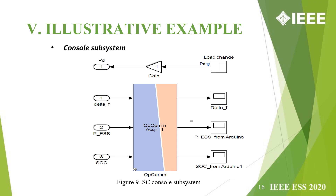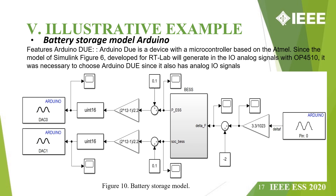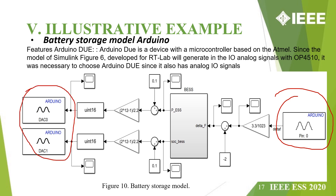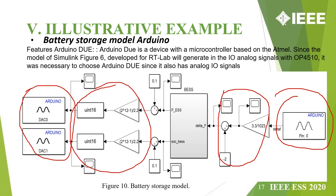Opal-RT's Op-Com block allows communication between command stations. The console subsystem contains user interface blocks — such as scopes, displays, manual switches, and constants — and runs on the host PC asynchronously from the computing subsystem. The battery storage model contains analog inputs and two analog outputs, along with blocks that perform operations to arrange the input and output signals.